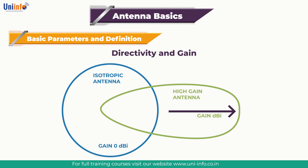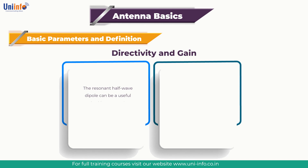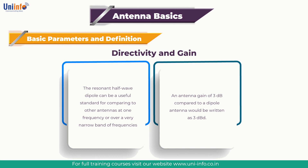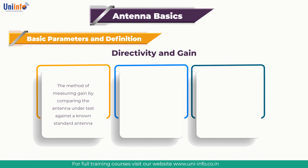An antenna gain of 3 dB compared to an isotropic antenna is written as 3 dBi. The resonant half-wave dipole is a useful standard for comparing antennas at one frequency or over a narrow band. An antenna gain of 3 dB compared to a dipole antenna is written as 3 dBd. The method of measuring gain by comparing the antenna under test against a known standard antenna with a calibrated gain is technically known as the gain transfer technique.